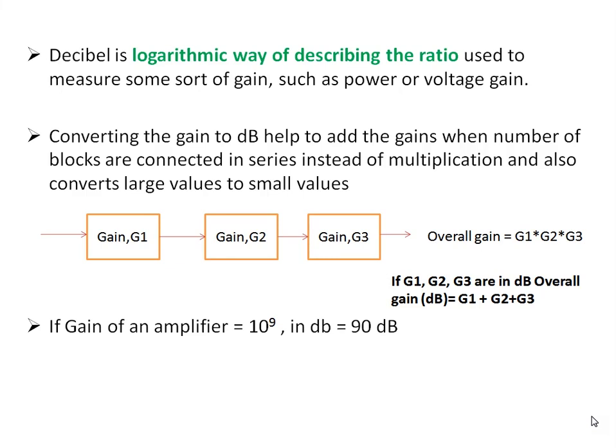What is the advantage of converting these gains or absolute values to decibels? If you consider any electronic system or control system which consists of a series of blocks with gains G1, G2, and G3, the overall gain is a product of all these gains. If you convert the gains of these individual blocks to decibels, to know the overall gain simply add all the gains in decibels.